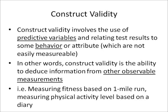Construct validity involves the use of predictive variables and relating test results to some behavior or attitude which are not easily measurable. In other words, construct validity is the ability to deduce information from other observable measurements. For example, measuring fitness based on a one-mile run — if someone runs a good time, you can deduce they are fit. Similarly, measuring physical activity level based on a diary: by reviewing it you can deduce fitness, but it doesn't prove it — it's a predictive variable.